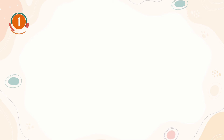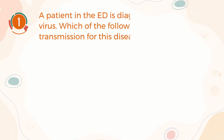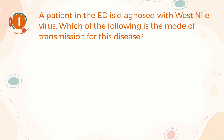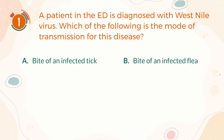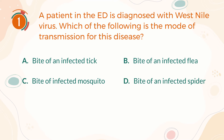Number 1. A patient in the emergency department is diagnosed with West Nile virus. Which of the following is the mode of transmission for this disease? A, bite of an infected tick. B, bite of an infected flea. C, bite of an infected mosquito. D, bite of an infected spider.